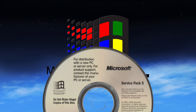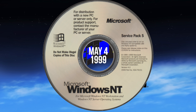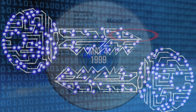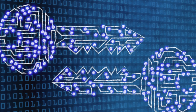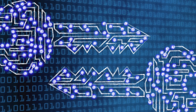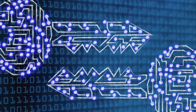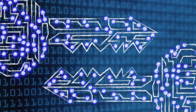On May 4th, 1999, Microsoft released Windows NT 4.0 Service Pack 5. Hidden away deep inside that operating system, as they had been since NT4's original release, were two important cryptographic keys.